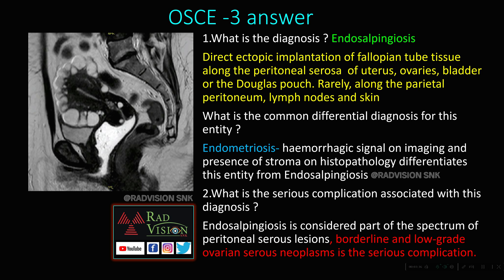What is the serious complication associated with endosalpingiosis? As endosalpingiosis is considered part of the spectrum of peritoneal serous lesions, borderline and low-grade ovarian serous neoplasms are the serious complication in cases of endosalpingiosis. Remember, endosalpingiosis presents as multiple cystic foci scattered along the serosa of the uterus and pelvic organs.